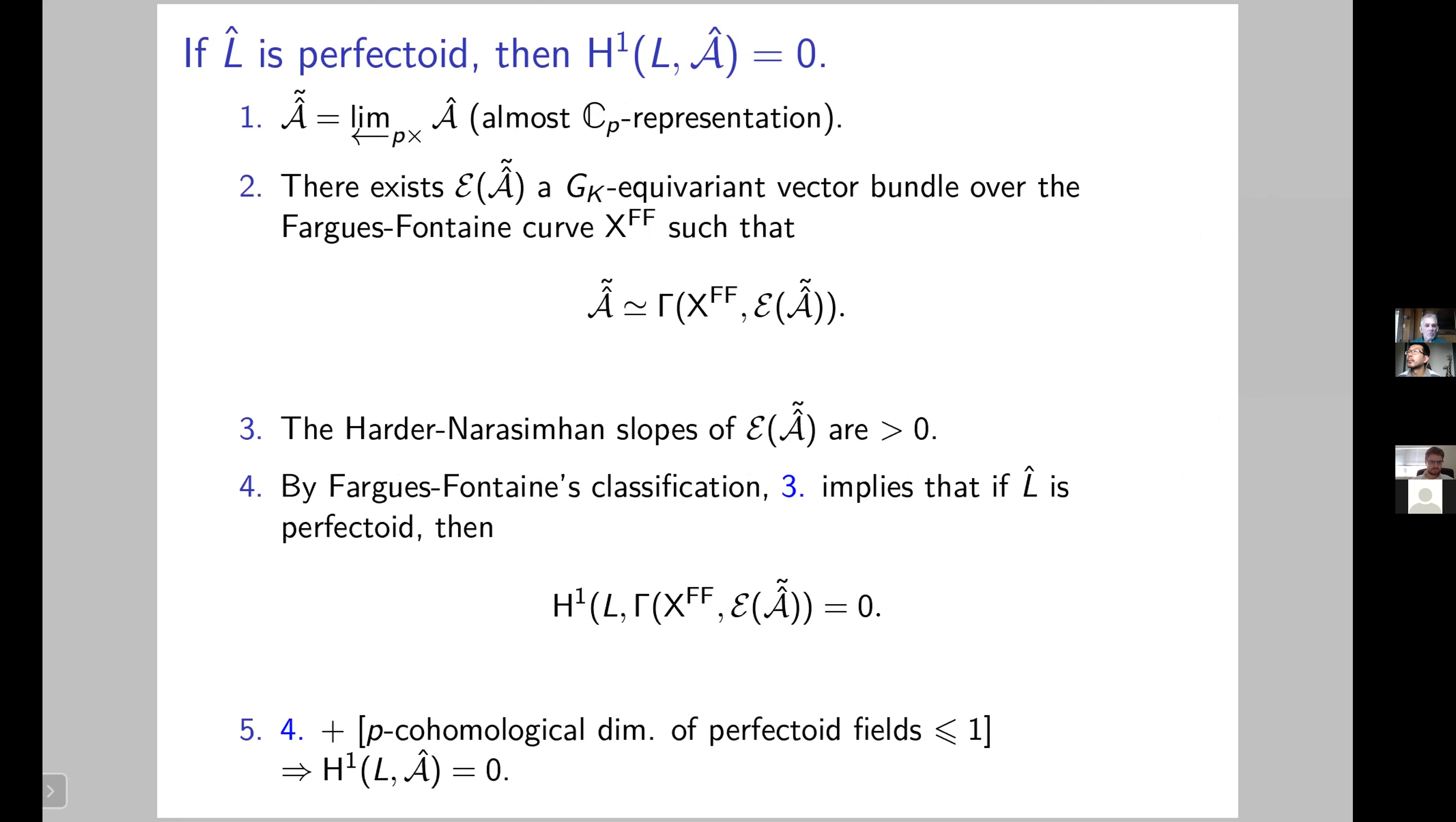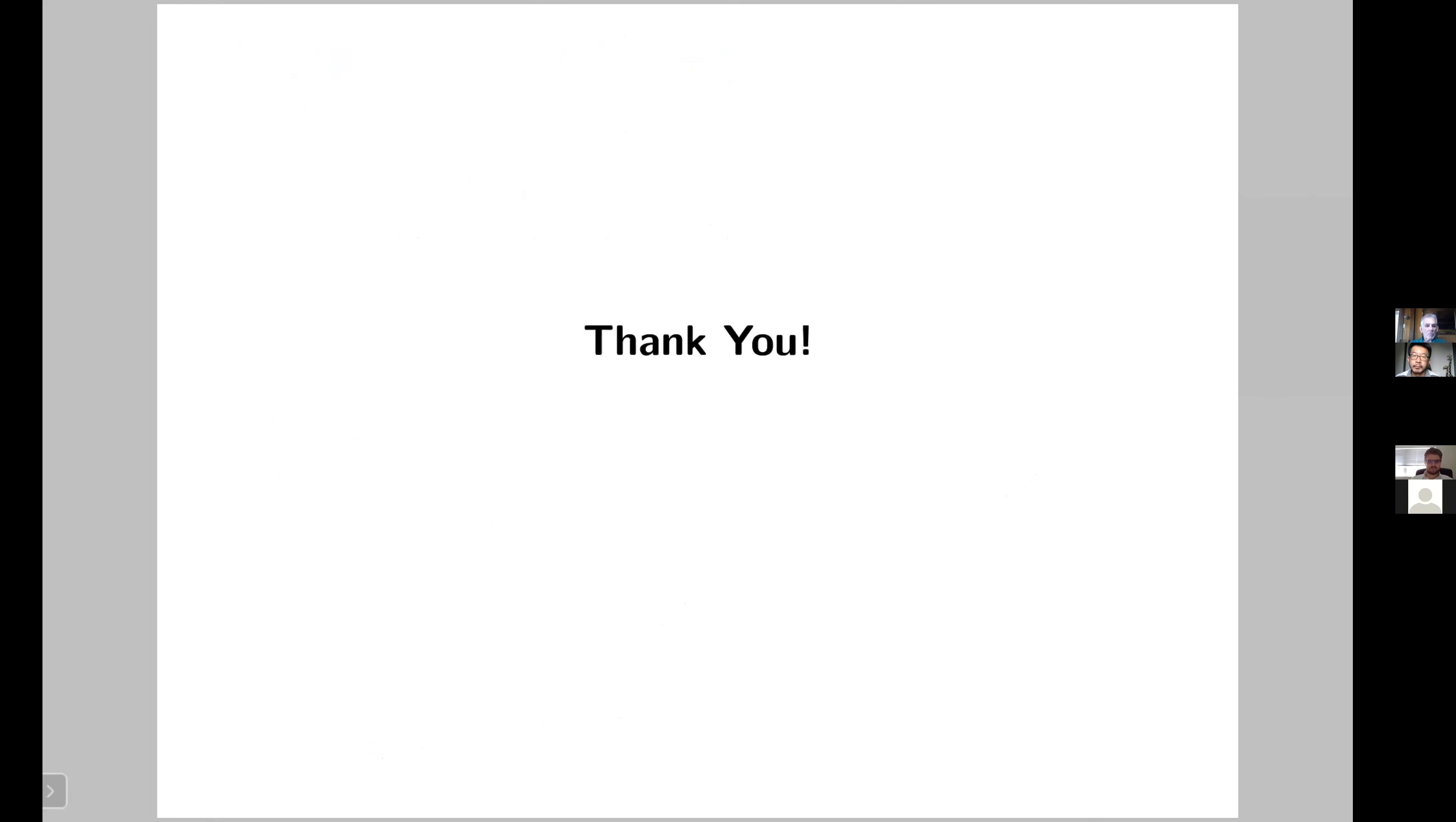But now we have a very strong result of Fargues-Fontaine, which tells you that this condition on the Harder-Narasimhan slopes implies that if L is perfectoid, then the Galois cohomology acting on this global section is actually trivial. And by point two, this global section is exactly the inverse limit by p of your commutative formula. This very powerful point four, combined with a small thing, which is that the p-cohomological dimension of a perfectoid field is always less than or equal to one, actually allows you to say that from the start, the Galois cohomology of this commutative formal group is trivial. Here it was very short to give ideas. We've replaced all the precise computations of Coates and Greenberg by completely p-adic Hodge theory arguments. The p-adic Hodge theory is really hidden in this point four, which relies on the very powerful classification of vector bundles over the curve. I think this time I really stopped. Thank you very much.